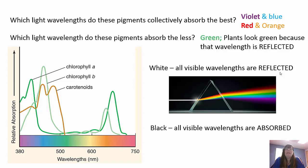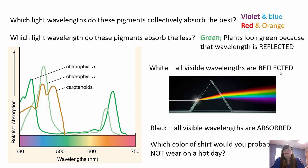Which wavelengths do the pigments collectively absorb best? Looking at the chart, blues and violets are the best absorbed, and then reds and oranges. Green is pretty flat — it's least efficiently absorbed. Plants actually look green because the green wavelength is what is reflected back. White means all visible wavelengths are reflected back, and black means all visible wavelengths are absorbed. So which color shirt would you not want to wear on a hot day? Black — because you don't want all those visible wavelengths absorbed into your body making you even hotter.